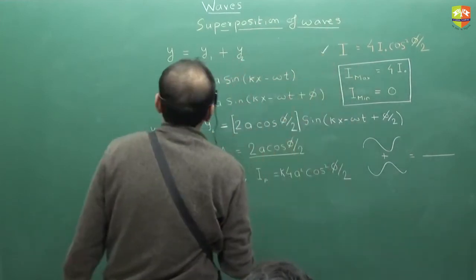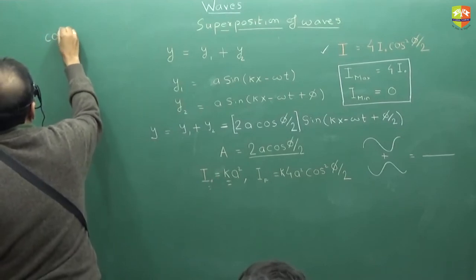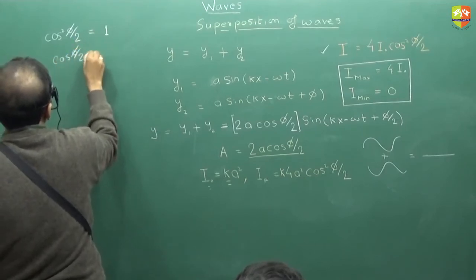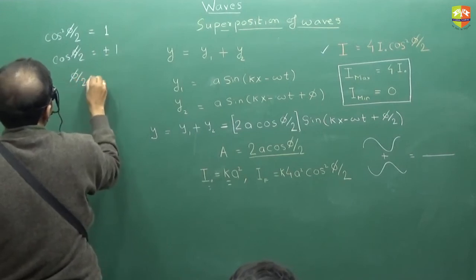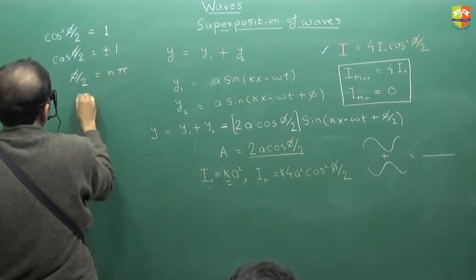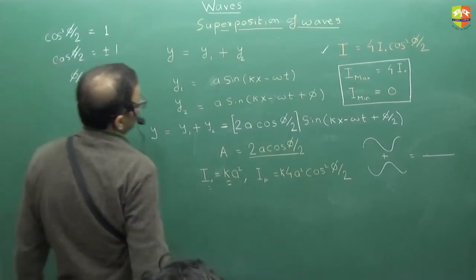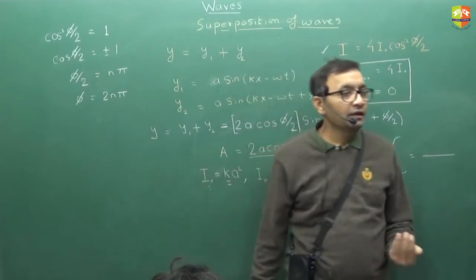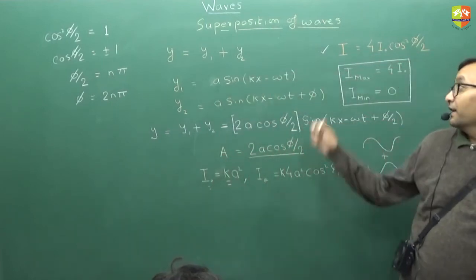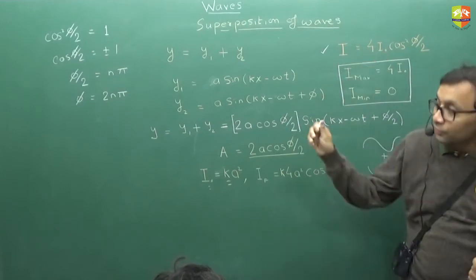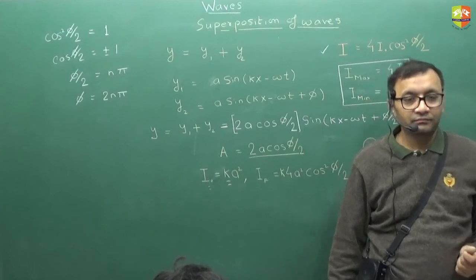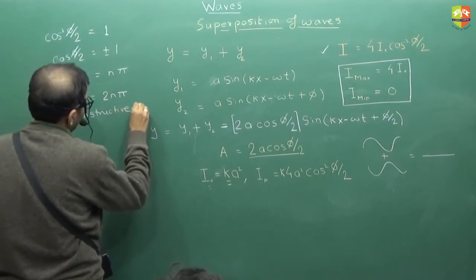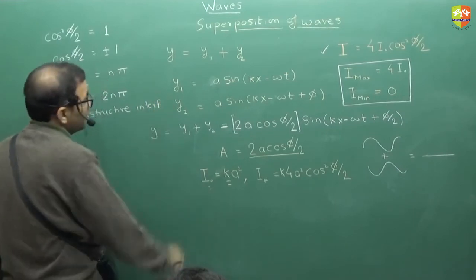Now tell me what should be the value of φ for which the maximum possible intensity comes? For that cos²(φ/2) should be 1. So cos(φ/2) should be plus minus 1. So φ/2 should be nπ. So φ should be equal to 2nπ. So if phase difference between the two waves is 2nπ, then you say that the maximum intensity will get generated. You also say constructive interference happens. This is for constructive interference between the two waves.